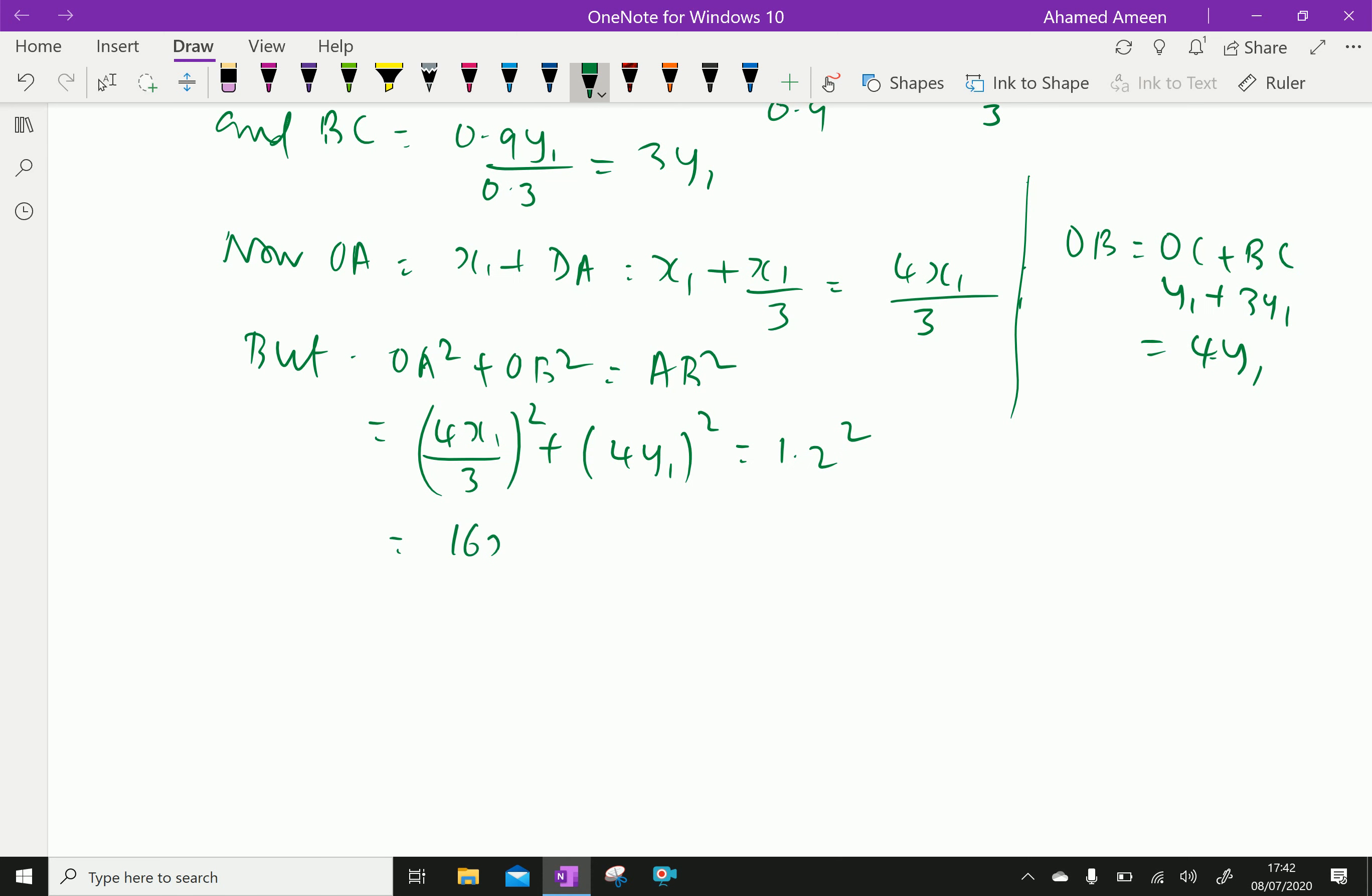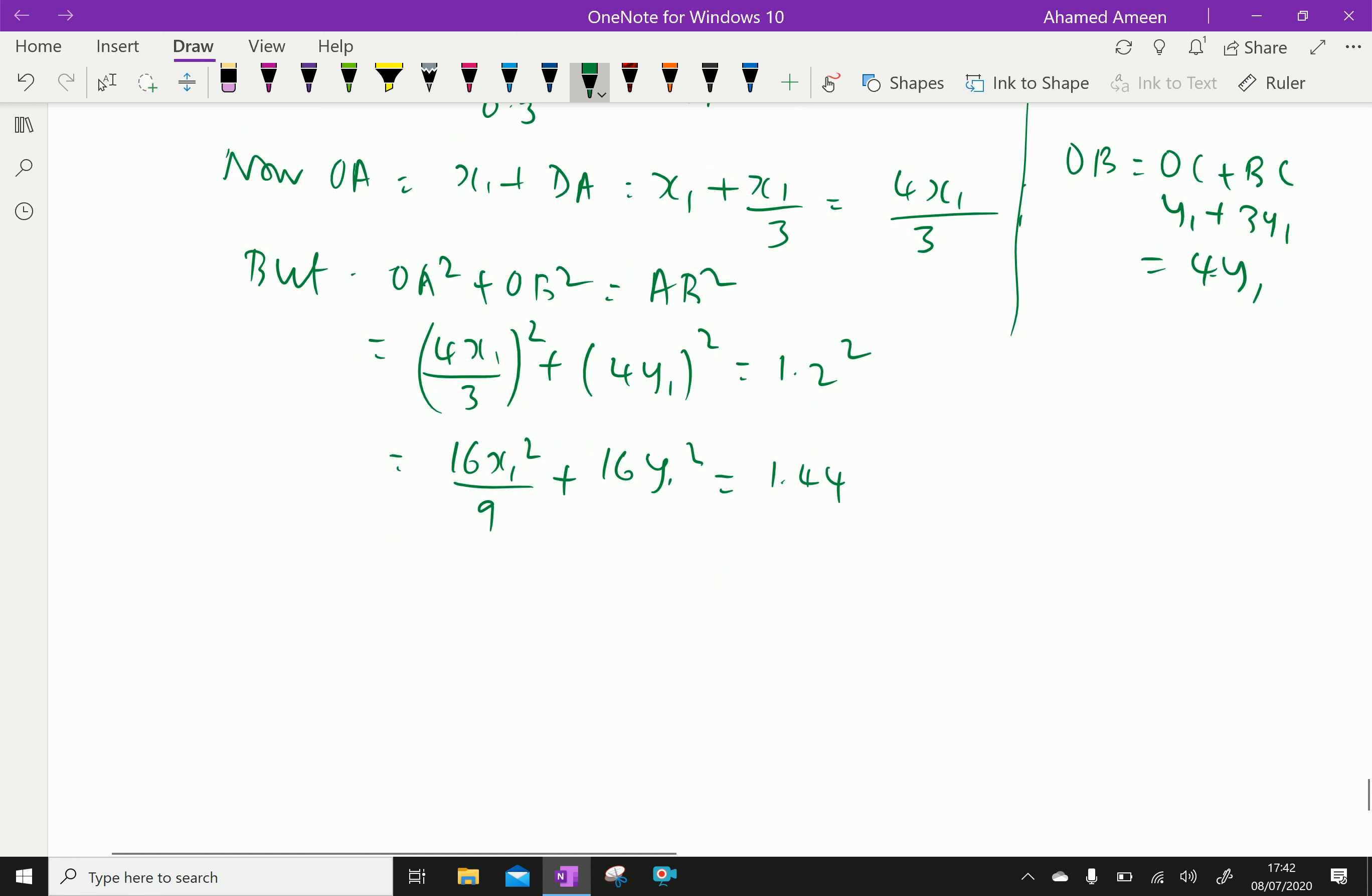Here, expanding, 16x₁ square over 9 plus 16y₁ square equal to 1.2 whole square is 1.44. Now, we will divide by 16.